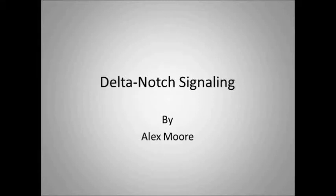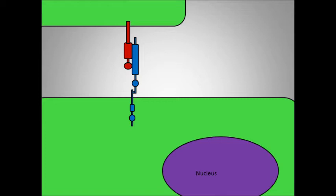Delta-notch signaling, a short animation by Alex Moore. In this juxtacrine signaling pathway, there is Delta, the ligand, and Notch, the receptor, both of which are present on the cell's surface.